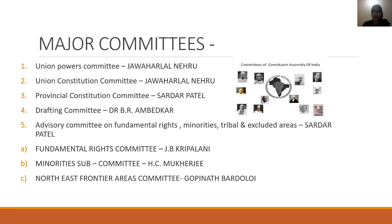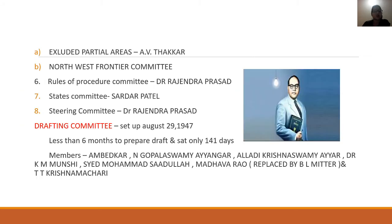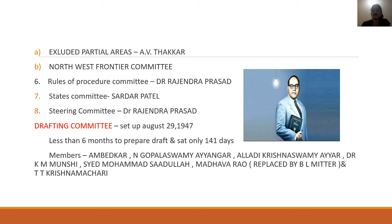The Fundamental Rights sub-committee was headed by J.B. The Minorities Committee was headed by S.D. Mukharji. The North East Frontier Committee and the Excluded and Partial Areas Committee were also formed. The Rules and Procedure Committee was headed by Dr. Rajendra Prasad. The States Committee — deciding which states would be part of India — was also established under separate responsibility.